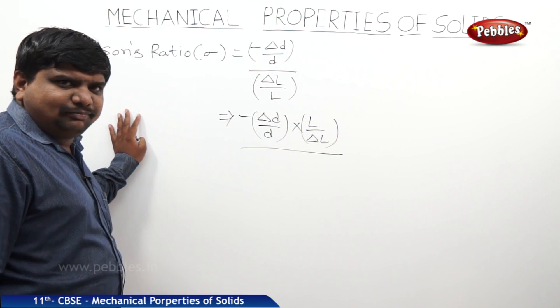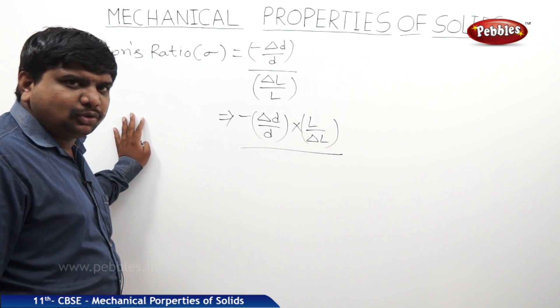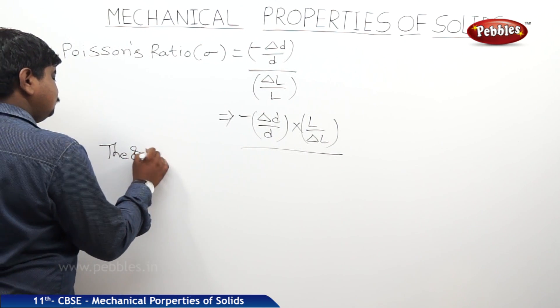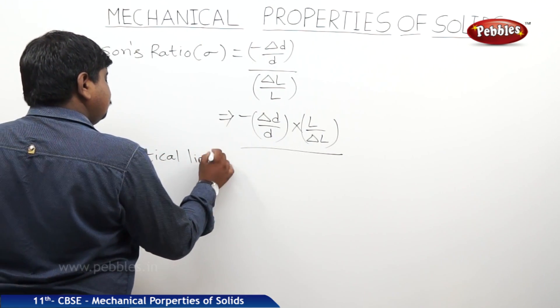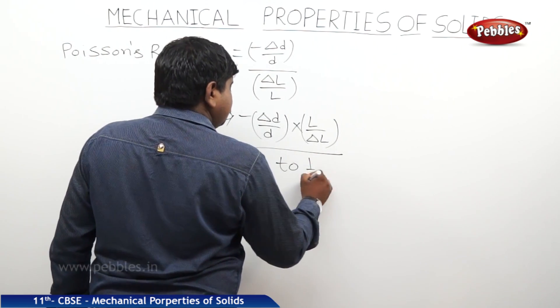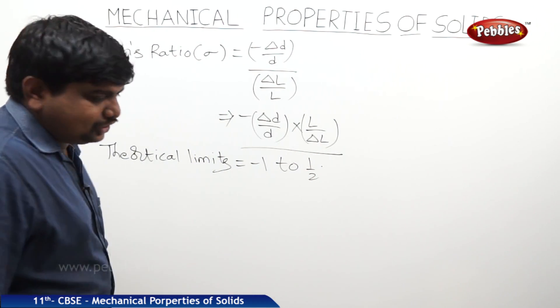The theoretical limits of Poisson's ratio is minus 1 to half. Practical limits is 0 to half.